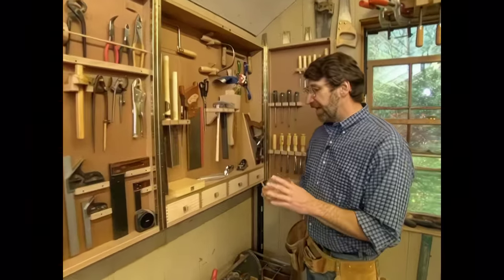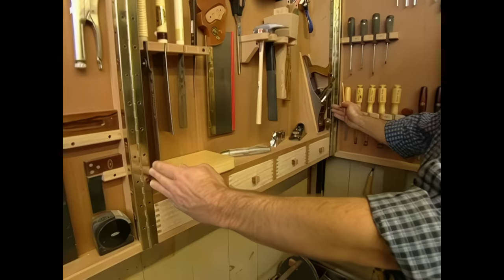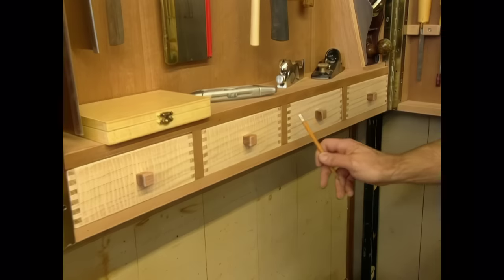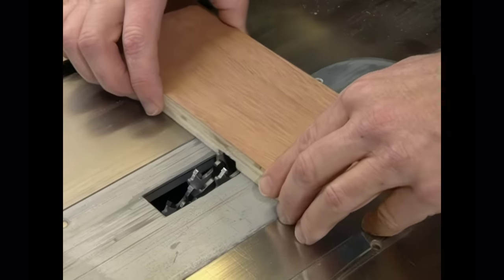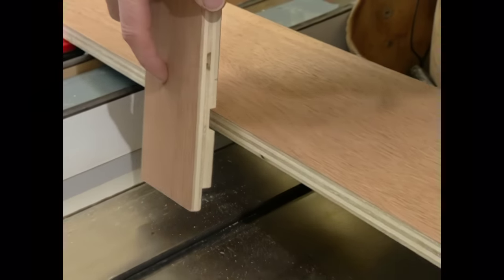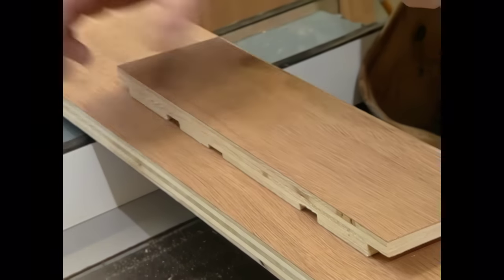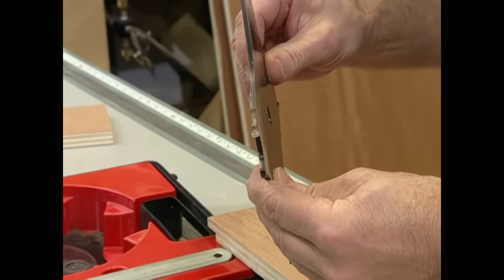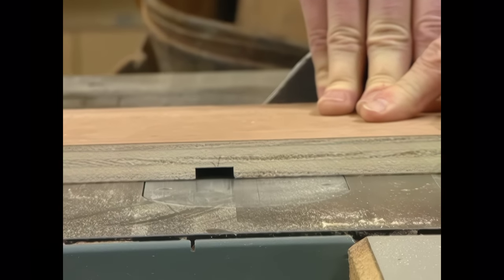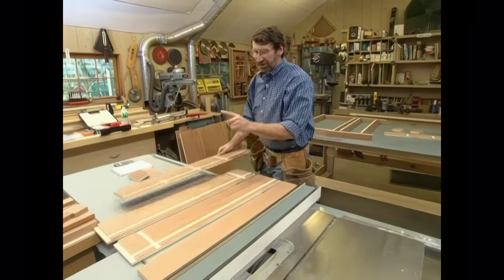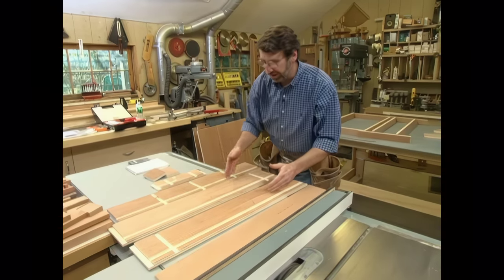That rabbet is made here at the table saw by setting up a stacked dado and a sacrificial strip. And I guide the piece through with my miter gauge. Let's take another look at our prototype. The next step is to make a dado in each side panel to receive this shelf. After I do that I'll put a series of dados in the shelf and the bottom to receive the partitions between the drawers.